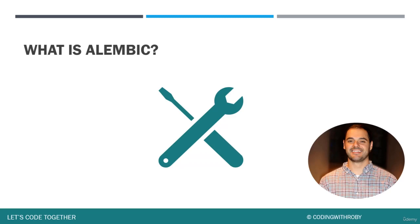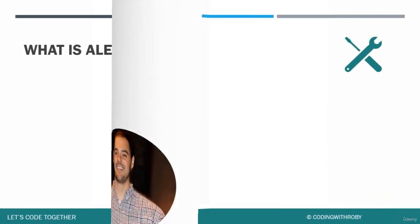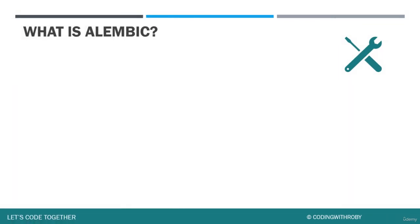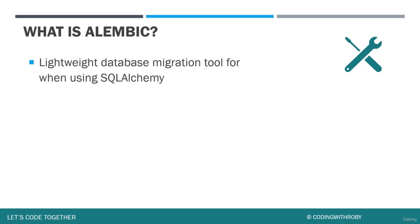Hey everybody and welcome to another lecture with Coding with Roby. In this lecture we're going to be going over Alembic. So what is Alembic? Well, Alembic is a lightweight database migration solution for when you use SQLAlchemy.